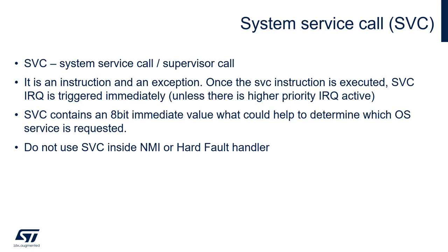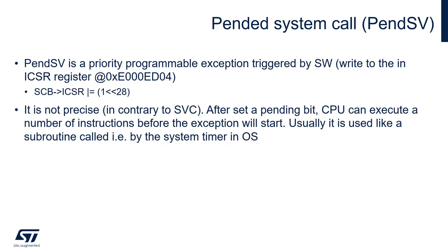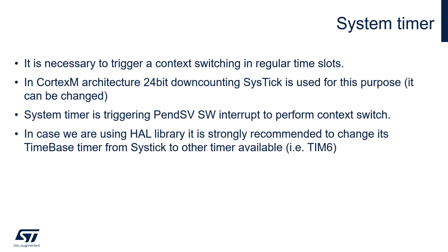PendSV is a priority-programmable exception triggered by software, done by writing to the ICSR register at its designated address. Unlike SVC, it is not precise — after setting the pending bit, the CPU can execute a number of instructions before PendSV actually starts. It is typically used as a subroutine called by the system timer in operating systems to perform a context switch.